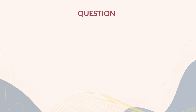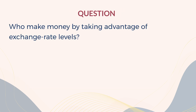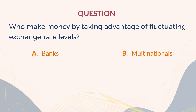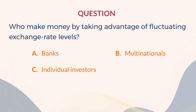Answer the question: Who makes money by taking advantage of fluctuating exchange rate levels? A. Banks. B. Multinationals. C. Individual investors. D. Speculators. The correct answer is D. Speculators.